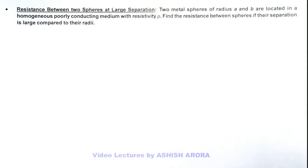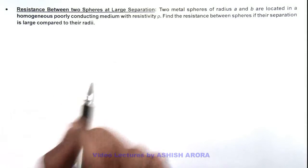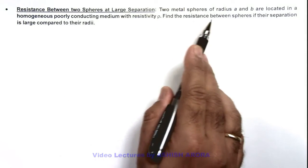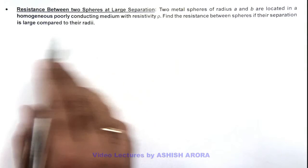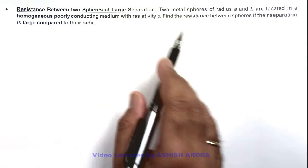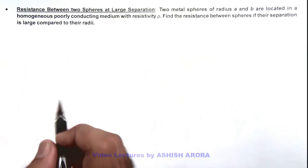In this illustration, we'll calculate the resistance between two spheres at large separation. Here we are given that two metal spheres of radius a and b are located in a homogeneous poorly conducting medium with resistivity ρ (rho). We are required to find the resistance between spheres if their separation is large compared to their radii.